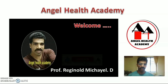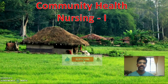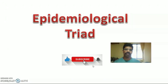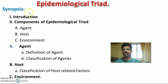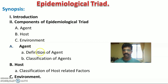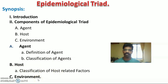Welcome to Angel Health Academy. Subject: Community Health Nursing 1. The topic for today's session is the Epidemiological Triad, also known as the Epidemiological Triangle. In this video, we will cover the introduction, the components of the Epidemiological Triad — that is agent, host, and environment — and in depth the agent definition, classification of agents, host meaning and classification of host-related factors, and environment-related factors.